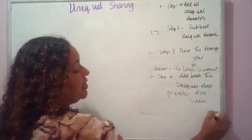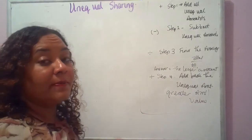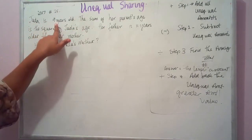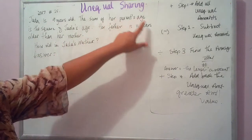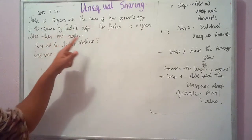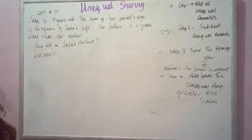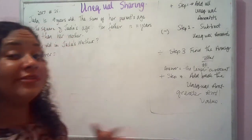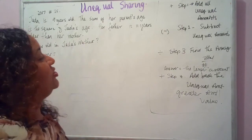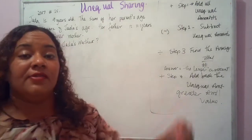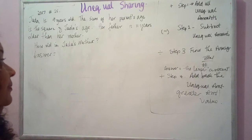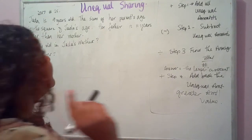Now that we've cleared up the steps, let's apply them to some possible questions. From 2017's paper, question 25: Jada is 9 years old. The sum of her parents' ages is the square of Jada's age. Her father is 11 years older than her mother. How old is Jada's mother? The first thing to do is identify the topic — this is unequal sharing, because you have two quantities and one is more than the other, adding up to a particular sum.